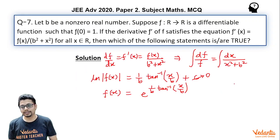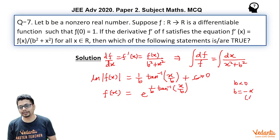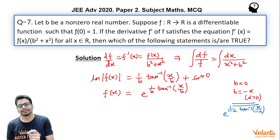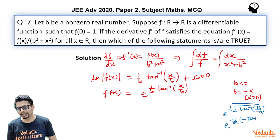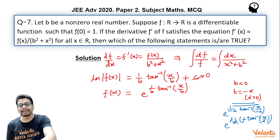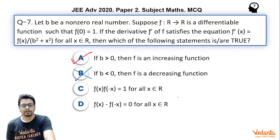Option B says if b < 0 then f is decreasing. Let b = −α where α > 0. Then f(x) = e^((1/(−α)) · arctan(x/(−α))). Since arctan(−x/α) = −arctan(x/α), the two negatives cancel, giving e^((1/α) · arctan(x/α)) with α > 0. So f(x) is still increasing even when b < 0, meaning option B is wrong.